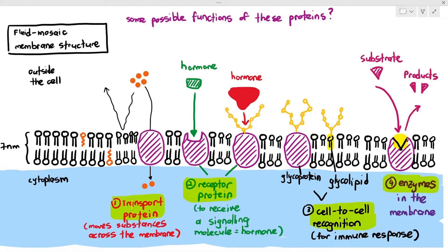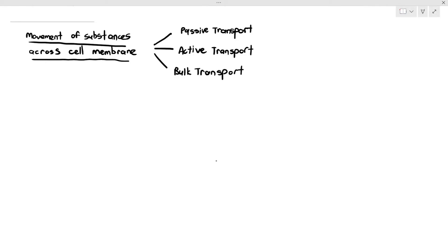The interesting thing about the way substances move across the cell membrane is that it can be divided into three types of movement or three modes of transport, which is known as passive transport, active transport, and bulk transport.